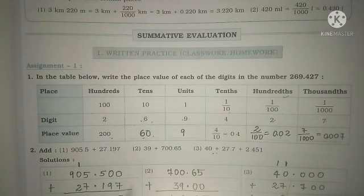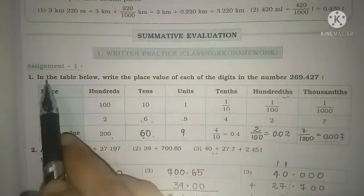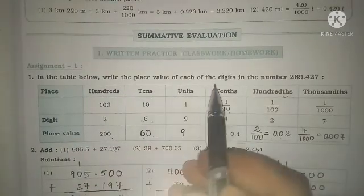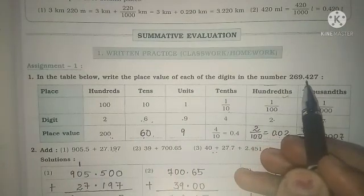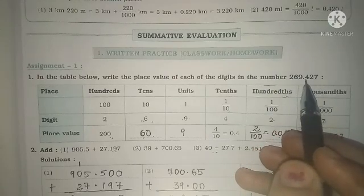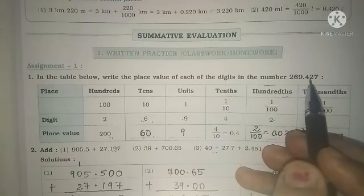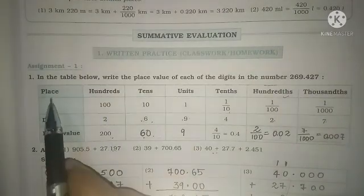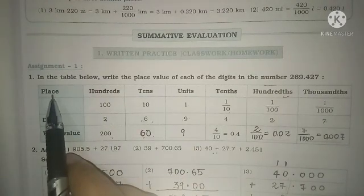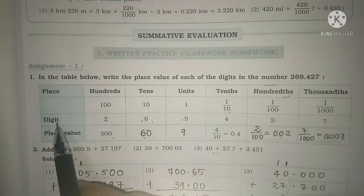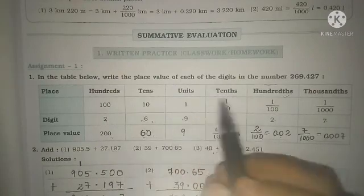Now let's solve the assignment questions from your workbook so it will be more clear for you all. We are going to solve the sums of Lesson 5, Decimal Fraction. In question number 1, they have given a table and asked us to write the place value of each digit in the number 269.427. The table has places: units, tens, and hundreds, with the digits 2, 6, and 9 accordingly.